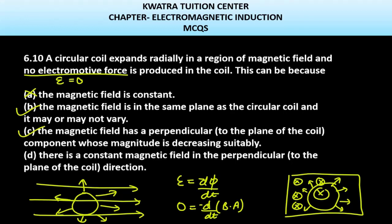For option d - if you have a constant magnetic field in the perpendicular direction, then e can't be 0. It will change and will have some value. So yes, b and c are correct out of these four.